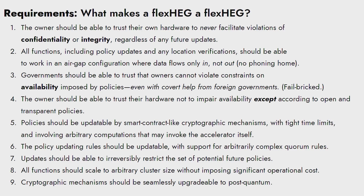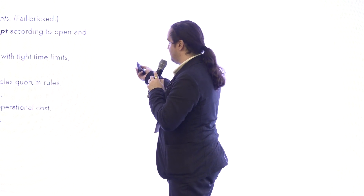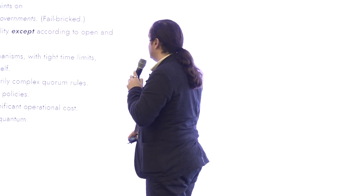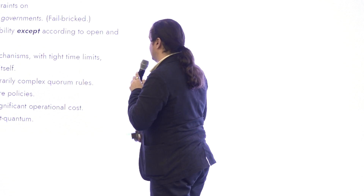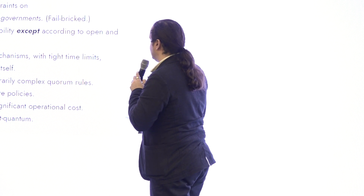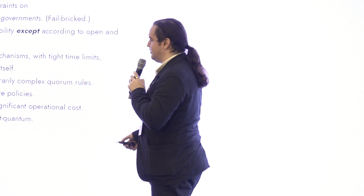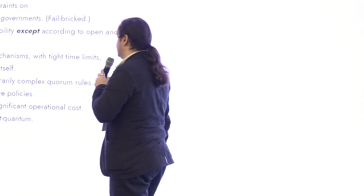The fourth criterion is that the owner should be able to trust the hardware will not impair availability except according to transparently disclosed policies. There's a cryptographic mechanism for updating policies, and policies need to be authorized and public to a certain extent, although they can include confidential data used for evaluations of NATSEC things. There shouldn't be any secret lever that the governance mechanism has to just shut down your inference operation without disclosure.